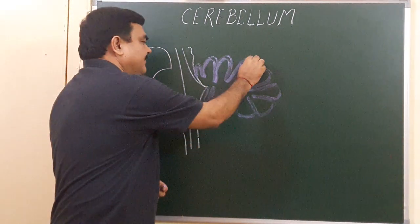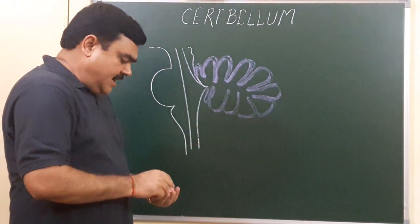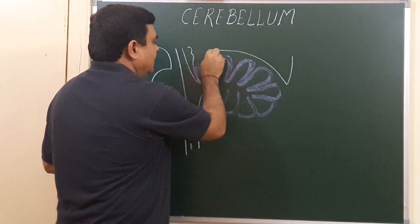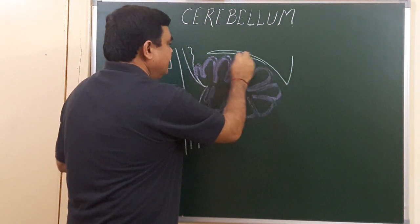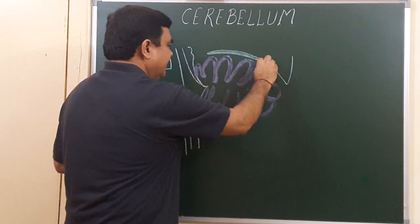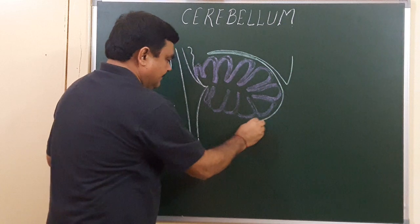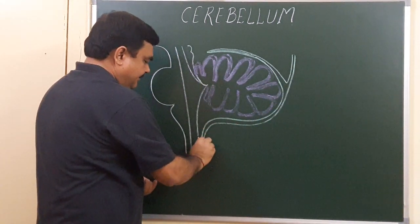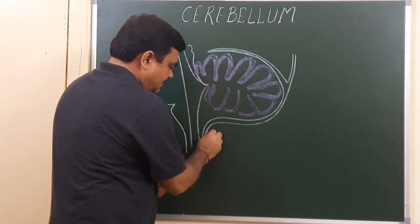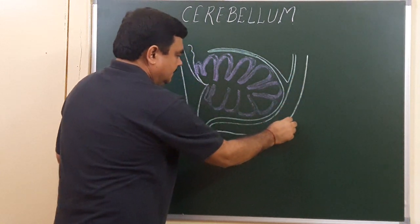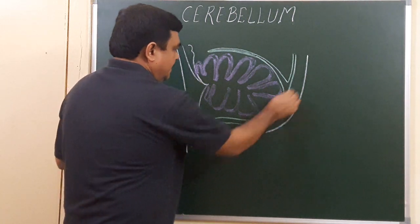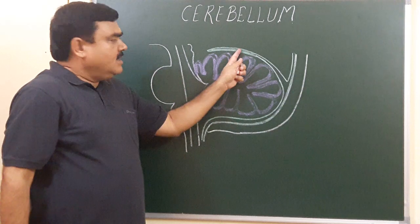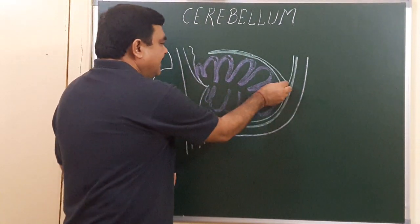The cerebellum lies in the posterior cranial fossa. It is covered superiorly by a fold of dura mater — that is the tentorium cerebelli. This is the tentorium cerebelli, this is a fold of dura mater, this is the meningeal layer, this is the inner layer of the dura mater, this is the cranial cavity — posterior cranial fossa.